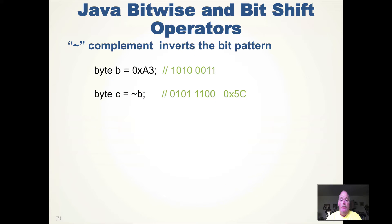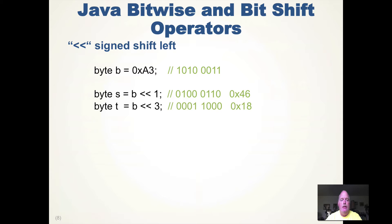Java supplies bitwise and bit-shift operators. The complement operator flips each individual bit — so A3 complement becomes 5C, with ones and zeros simply swapped. That's the tilde operator. Shift left shifts the bits to the left and adds a zero in the rightmost position — the leftmost bit falls off and is discarded. Shifting one position gives S; shifting three positions adds three zeros and you can see the resulting hex values.